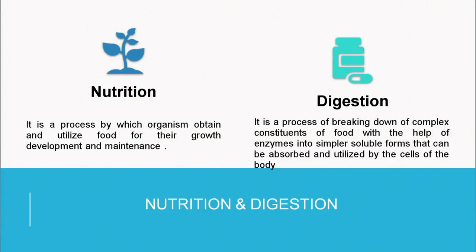What is digestion? Digestion is a process of breaking down of complex constituents of food with the help of enzymes into simpler soluble forms that can be absorbed and utilized by the cells of the body. Digestion is basically the breakdown of food so that it can be absorbed by the body and ultimately assimilated for growth and development.